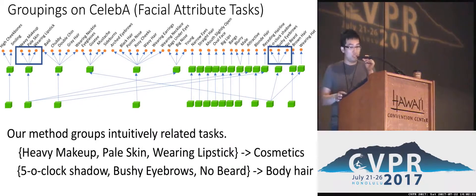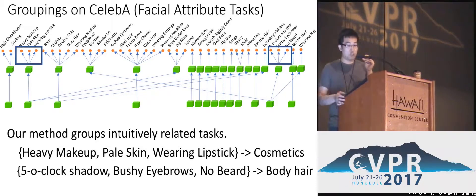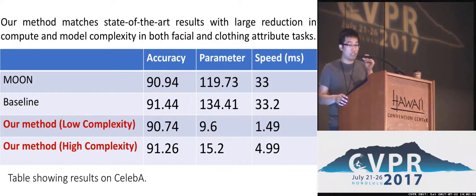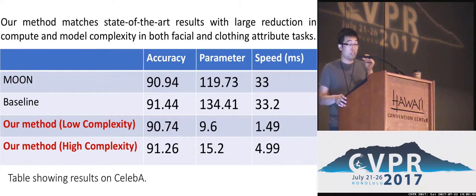Here are some results. Using our approach, we can learn very sensible groupings. For example, when considering facial attribute tasks, we can see that some groupings correspond to cosmetics and some correspond to body hair. We also show that our method can generate models that are very lightweight, very fast, and at the same accuracy level as state-of-the-art approaches.